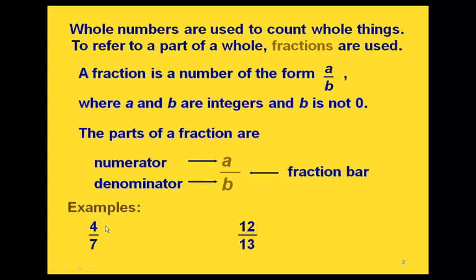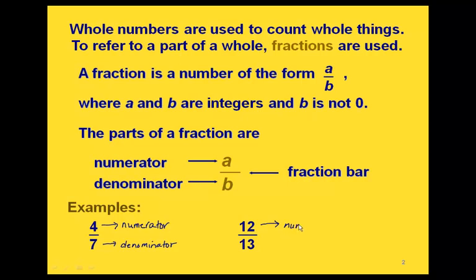Here are a couple of examples. If we have the fraction 4 sevenths, then the 4 would be our numerator and the 7 would be our denominator. In this fraction over here, the 12, since it's on the top of the fraction bar, is the numerator. And the 13, since it's under the fraction bar, is the denominator.